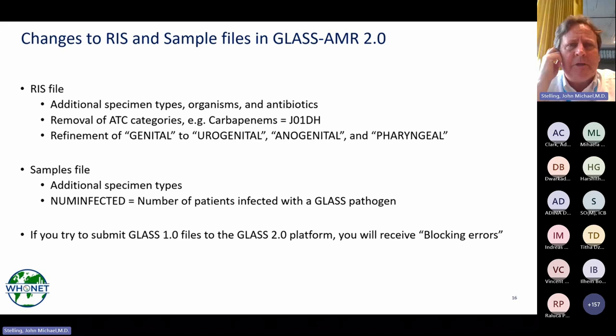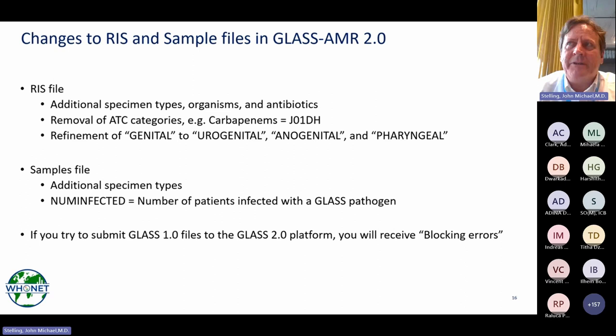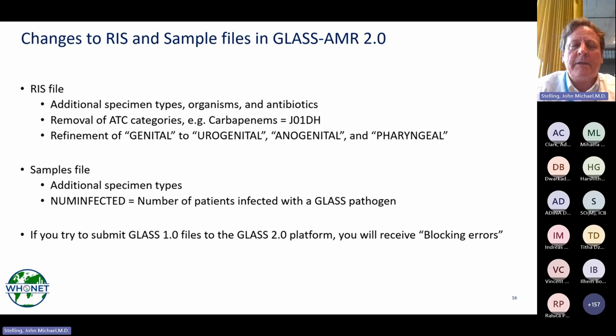We have received emails from people saying they tried to submit but received blocking errors. The reason is you need to update from the WHO Net GLASS 1.0 to GLASS 2.0 export, which incorporates the modifications. Also, GLASS 1.0 had a specimen value called 'genital,' which GLASS 2.0 no longer recognizes — it's now categorized into three new values. There is also a new variable: number of patients infected with a GLASS pathogen. WHO Net calculates all of those things automatically.